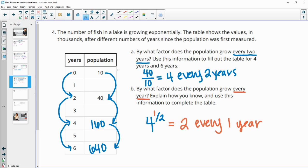So now we can complete the table with this. So now every one year we're multiplying by two. So 10 times two would be 20, 20 times two would be 40, 40 times two would be 80, times two is 160, times two is 320, times two is 640.